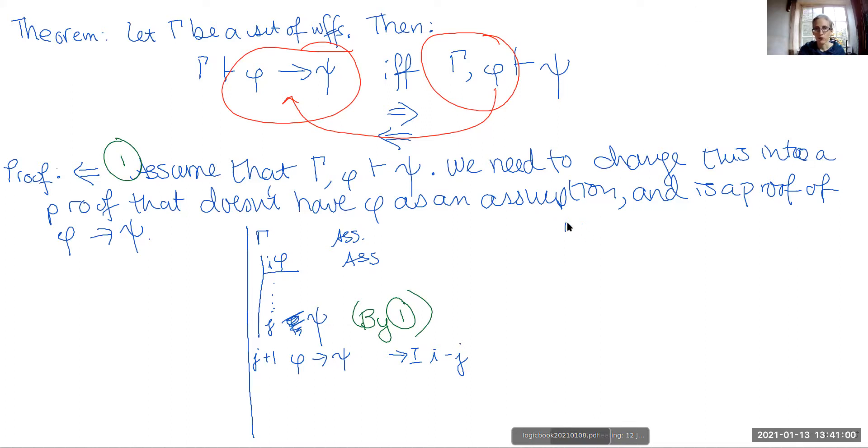At line one, say we have assumption gamma one. And then at line two, we have assumption gamma two. Line three, assumption gamma three. Suppose gamma just has three formulas in it.